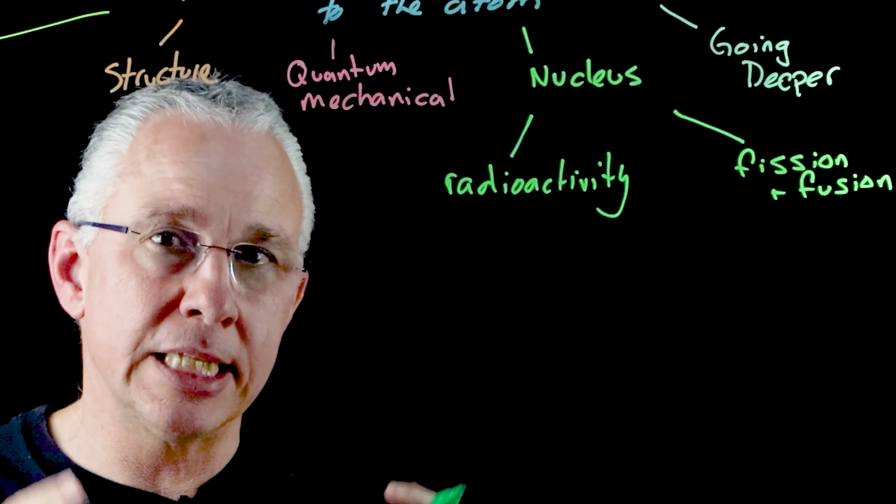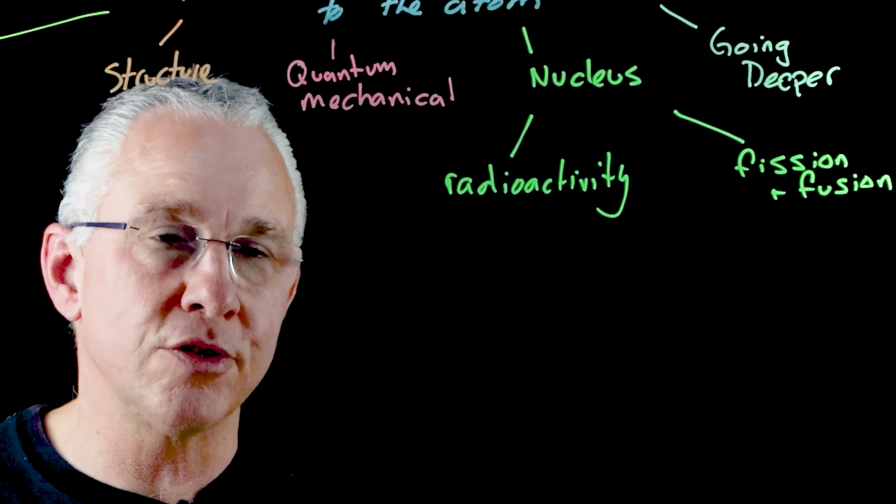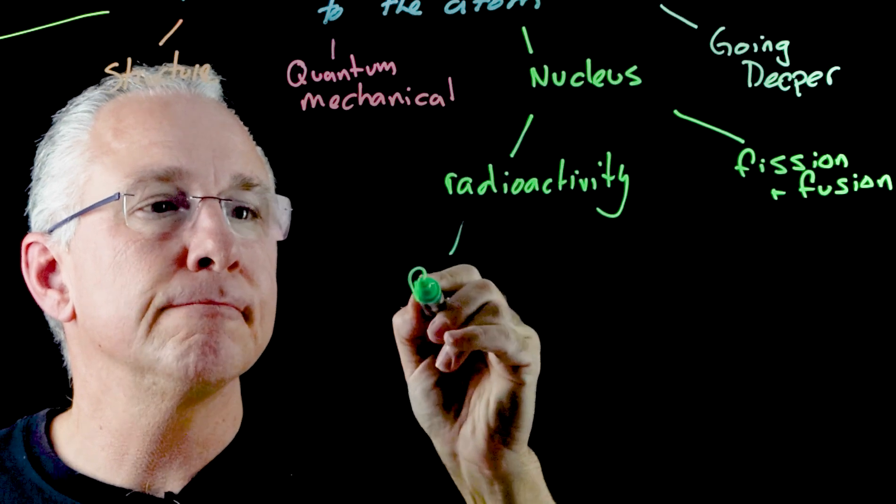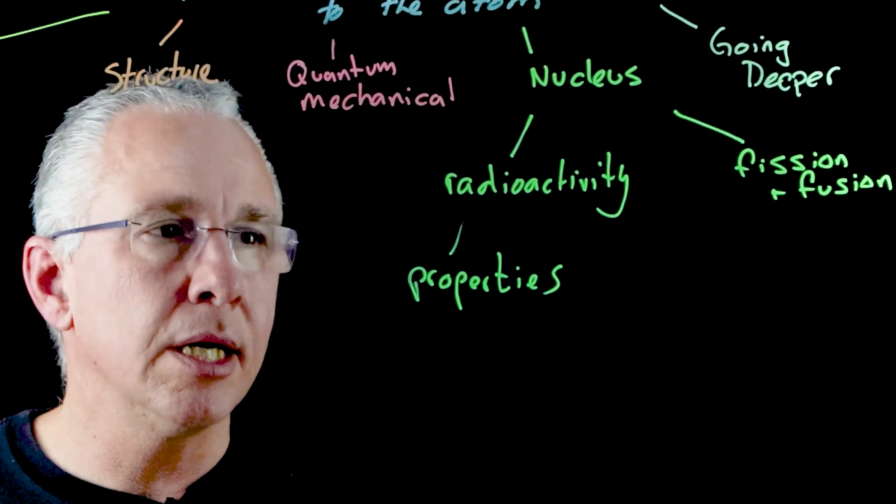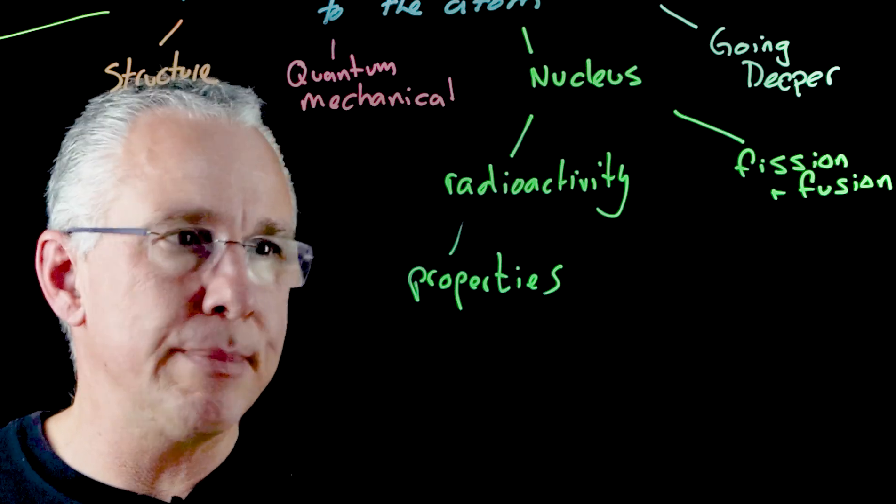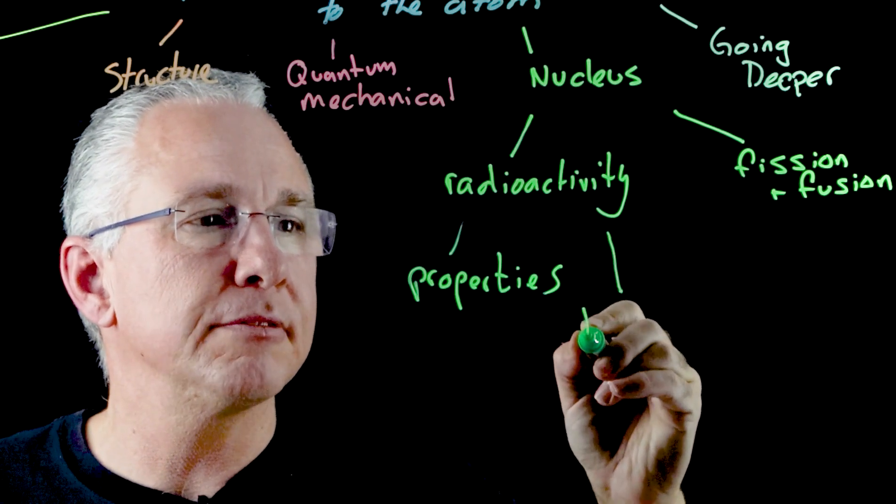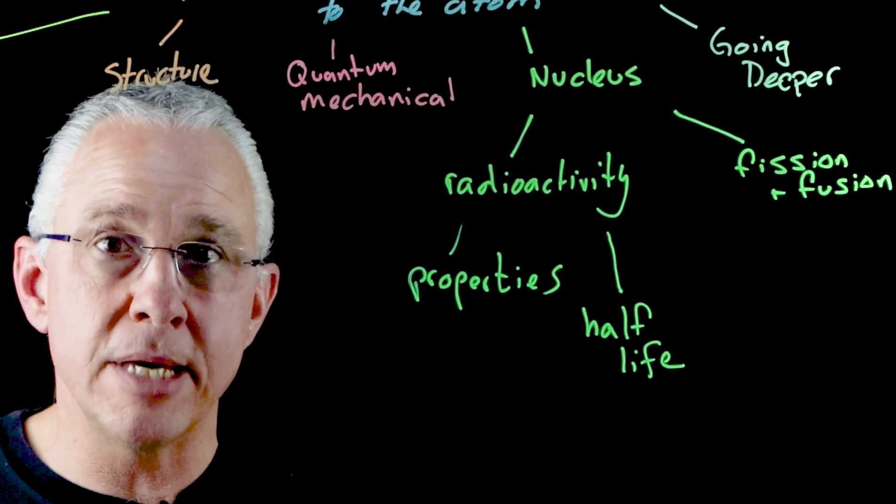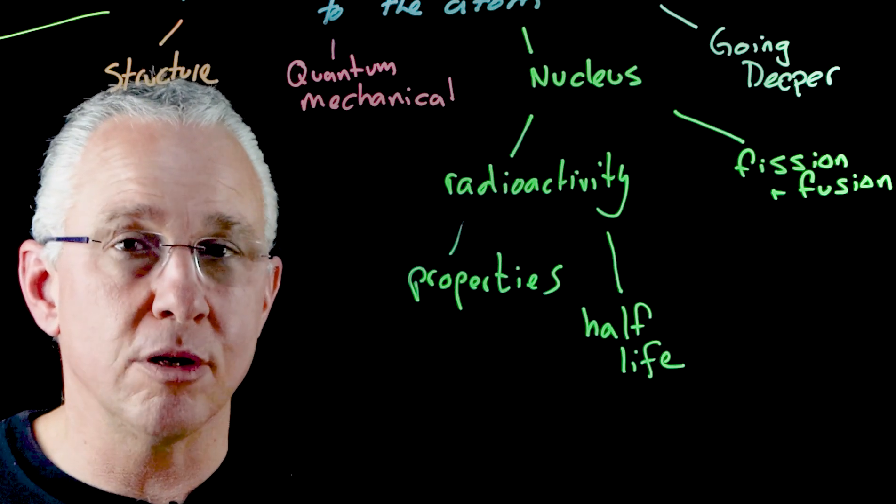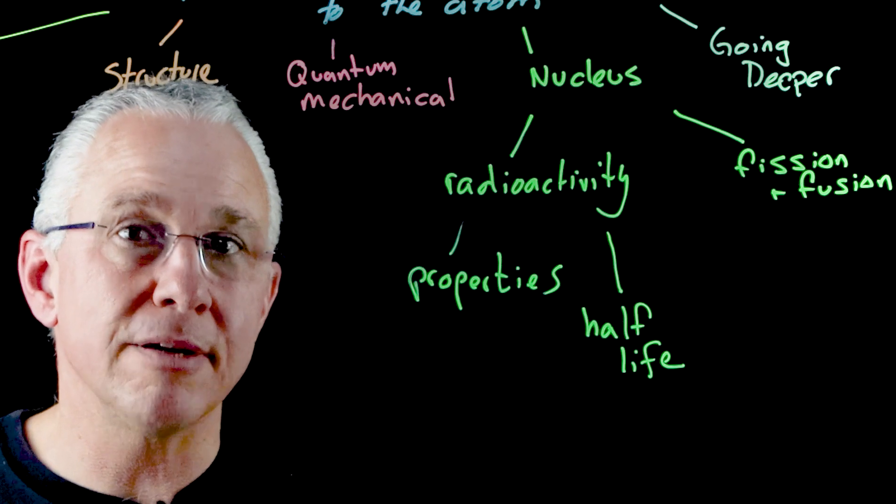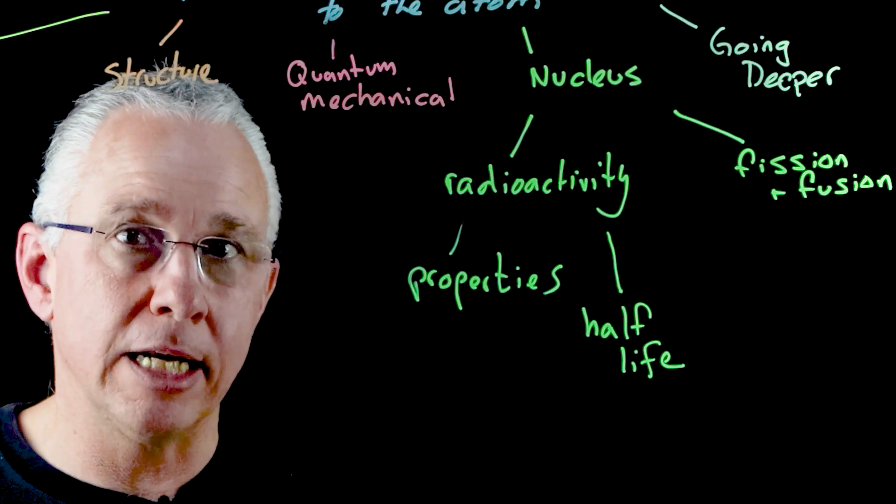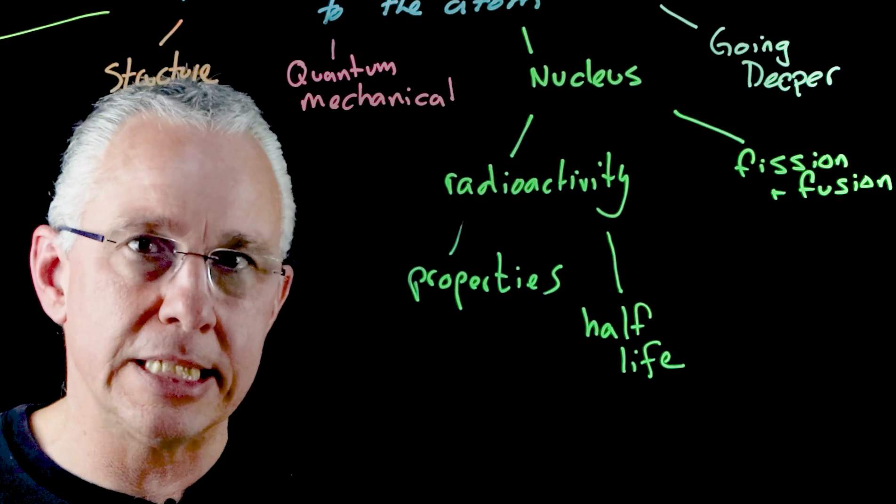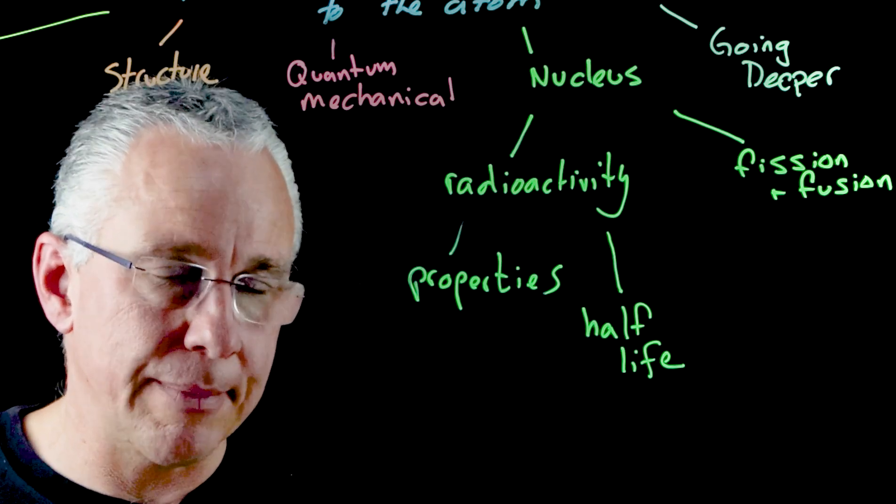Now, when we look at radioactivity, the syllabus in particular wants you to concentrate not only on its properties, and I've already mentioned alpha, beta and gamma radiation, but then also specifically how we measure that and we're interested in the half-life. In other words, the rate of this process can be measured. And we refer to the concept of a substance's half-life, how fast it decays or transmutes into another element in the process of releasing alpha, beta and gamma radiation.